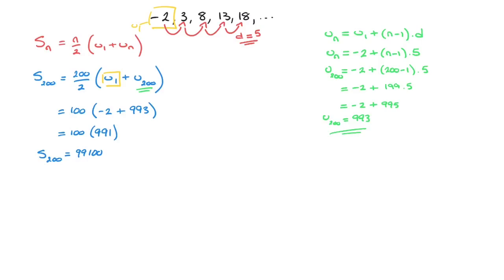And there we go — that's how we use the formula for the sum of the first n terms of an arithmetic sequence. There's actually a second formula, which we'll be learning in a later tutorial. I really hope that helps, and if it did, please hit like on this video and subscribe to our channel, because that really helps us. See you soon.